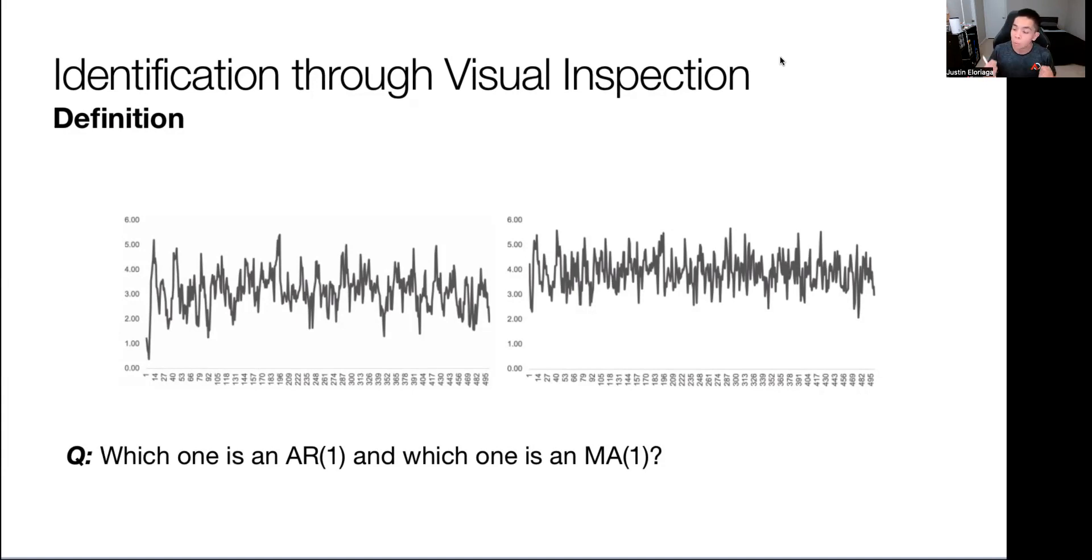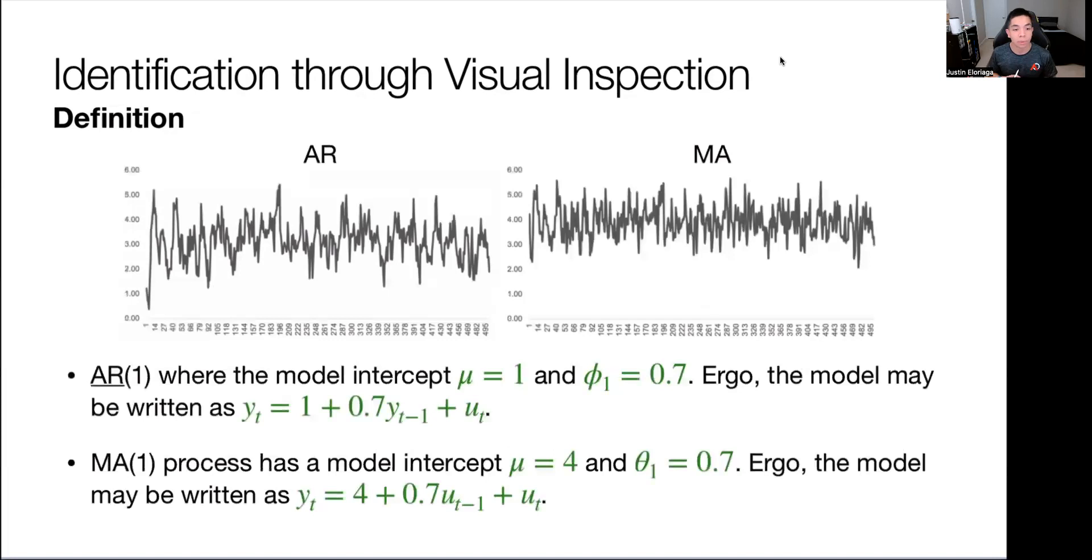So there must be some way by which we can distinguish an AR, an autoregressive process, from an MA, and the way we can do that is by looking into the partial autocorrelation function and the autocorrelation functions.